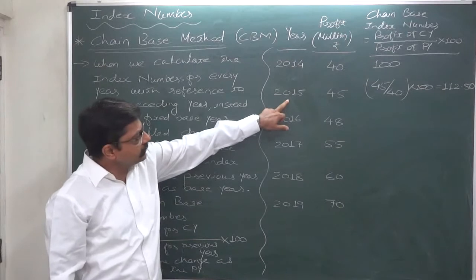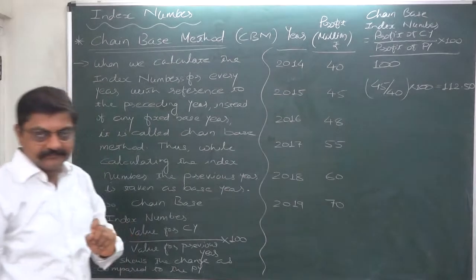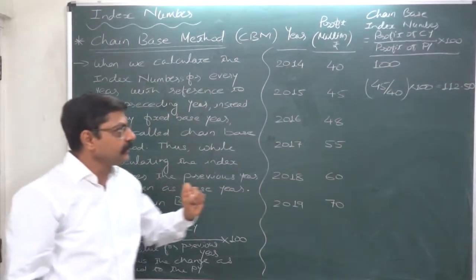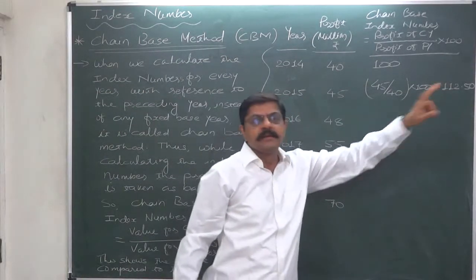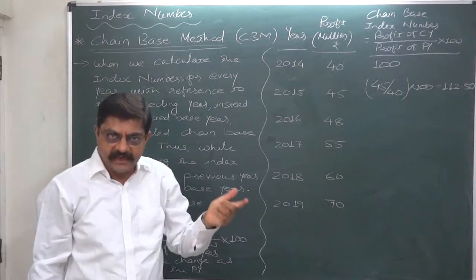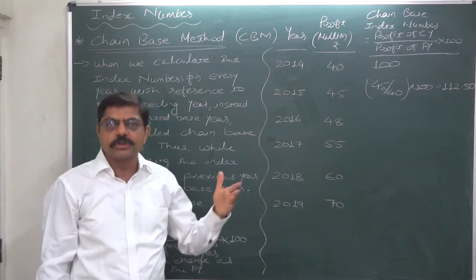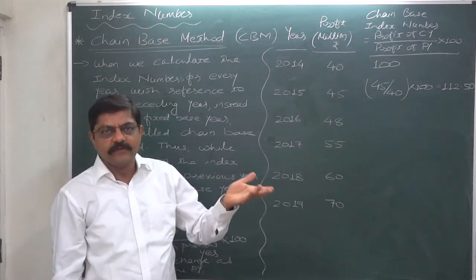If we subtract 100 from the index number, the difference is rate of change as compared to the base year. If the difference is positive, it shows increase or growth. If the difference is negative, it shows decrease.